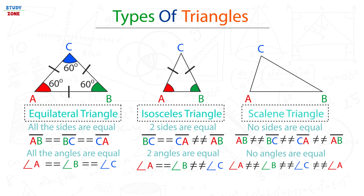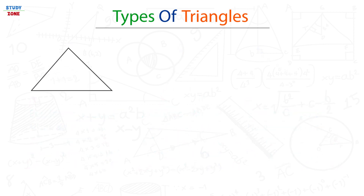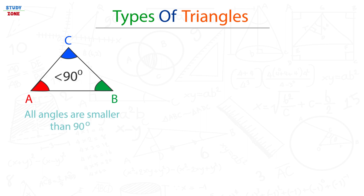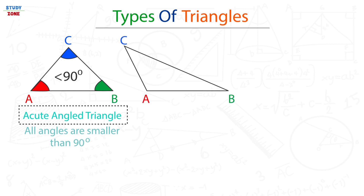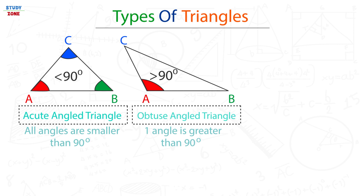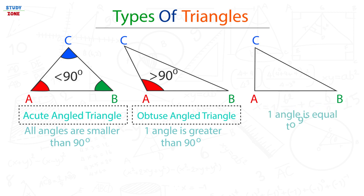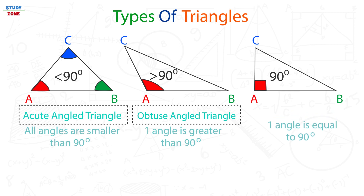This type of triangle is known as a scalene triangle. The next classification of triangles is based on the measure of angles. The first type is where all angles are less than 90 degrees — all angles are acute angles — and this is called an acute angle triangle. The second type is where one angle is greater than 90 degrees, making it an obtuse angle triangle. The third type is where exactly one angle is equal to 90 degrees, called a right-angled triangle.